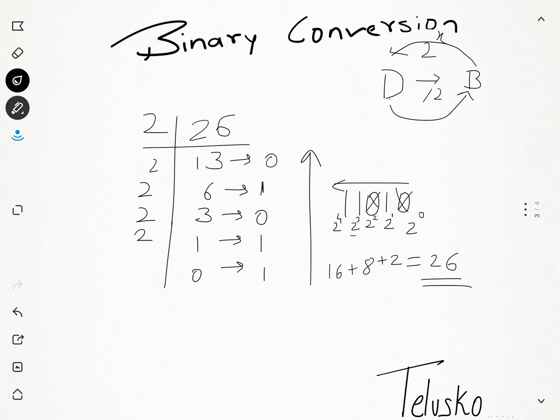So to summarize: to convert decimal to binary, divide by two and read remainders upward. To convert binary to decimal, use powers of two. Let me know if you want more videos on binary conversion. Thank you for watching, and make sure you subscribe to the channel for more videos.